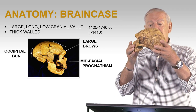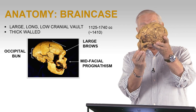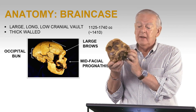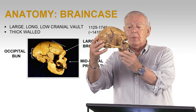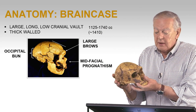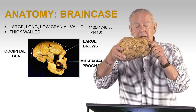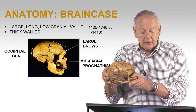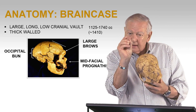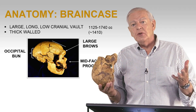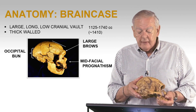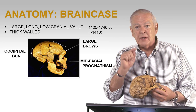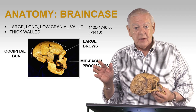If you look at this in lateral view — side view — and you hold it in the correct position, remember there was a Frankfurt horizontal, which is from the bottom of the orbit to the top of the ear openings on both sides and it forms that plane. So that would be more or less a proper orientation. And you clearly see that it is a long, fairly low cranial vault — it doesn't have a rising forehead. The bones are very thick, that's also characteristic. They had a range of cranial capacity from about as low as 1,125 to as large as 1,740 cc.